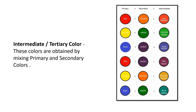The last group is intermediate or tertiary colors. These are produced by combining one primary color and one adjacent secondary color. There are six intermediate colors: red-orange, yellow-green, blue-violet, red-violet, yellow-orange, and blue-green.